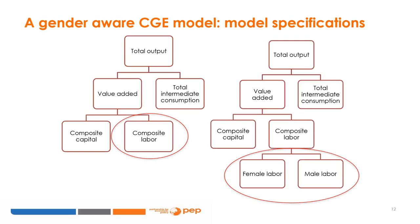A nested structure is usually adopted to describe the production process in CGE models. At the top level, output combines value-added and total intermediate consumption. At the next level, value-added is a combination of labor and capital. In a situation where there is no distinction between male and female workers, value-added is a combination of composite labor and capital. With a gender decomposition of labor, we introduce an additional level to the nested production structure. At the fourth level, composite labor combines male and female labor. This is the simplest way of introducing a gender dimension to the CGE model.